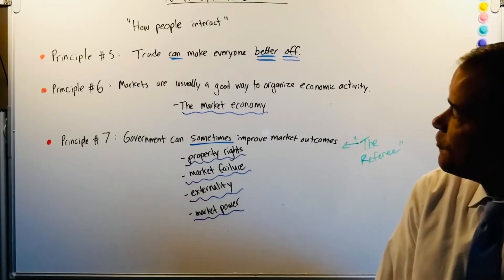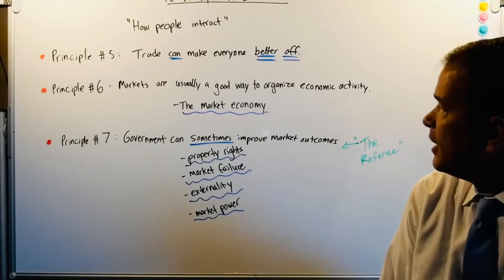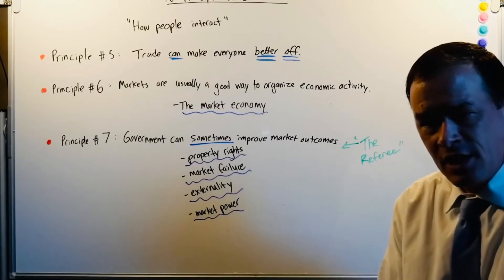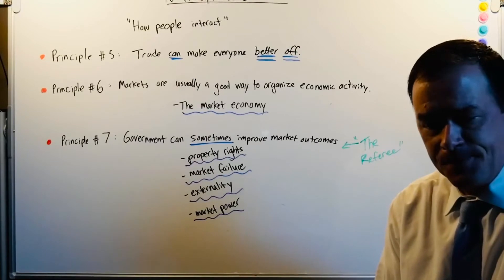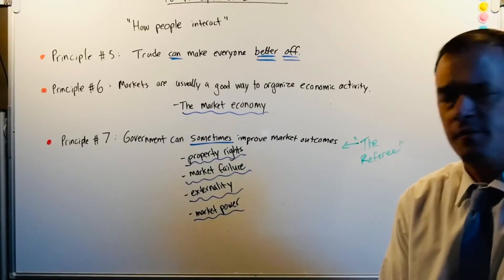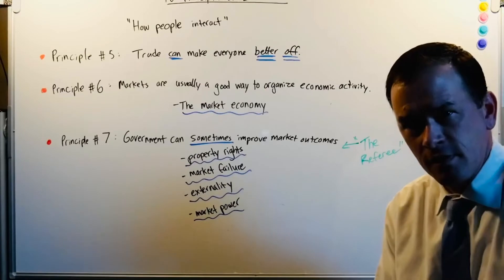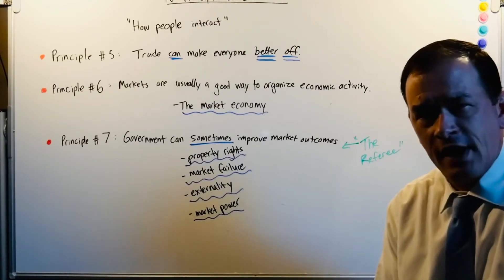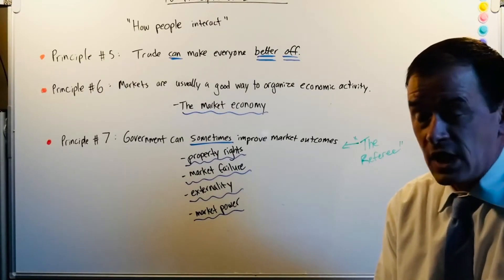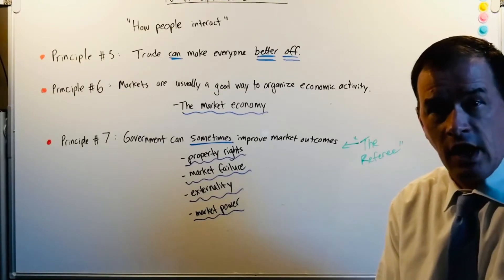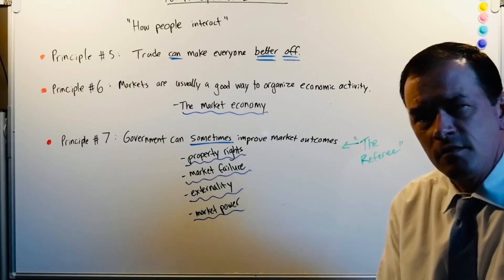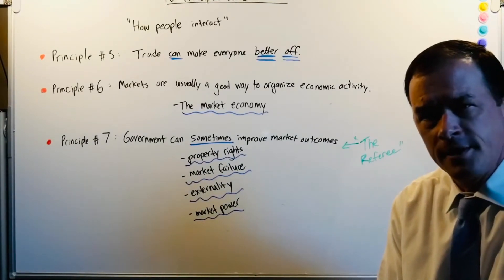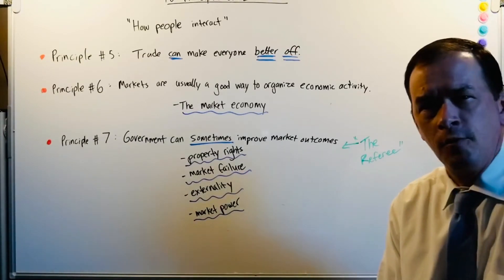Principle number five is trade can make everyone better off. A lot of times trade gets a bit of a black eye — you'll hear 'buy US, buy this, buy that.' Well, if you go in and buy a shirt, do you really honestly look at the tag? That's a behavior that most Americans do not do. I grew up on a farm, so certainly I hope you buy local beef.